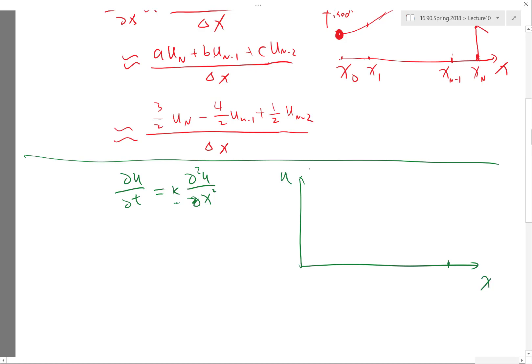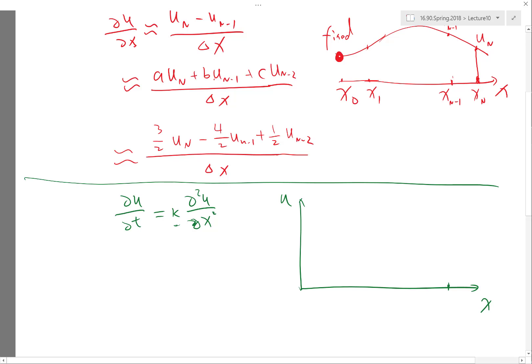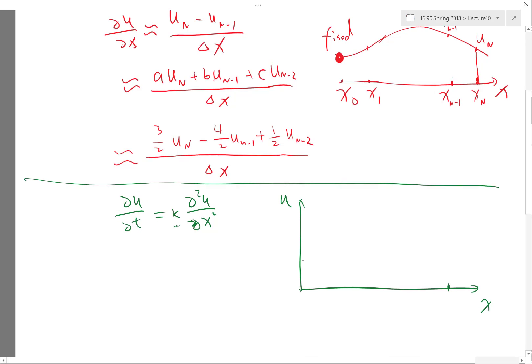And there are two types of boundary conditions you can apply. One type of boundary condition is similar to the fixed boundary condition we have in the previous case. So a fixed boundary condition is also called Dirichlet boundary condition. It's just named after a mathematician Dirichlet that did a lot of partial differential equation analysis early in the history of analysis.